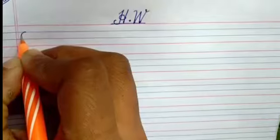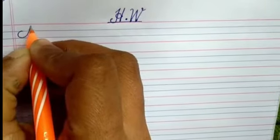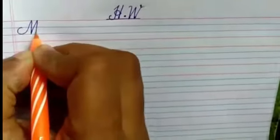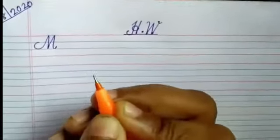Make a C like small curve. Go to line number 1. Come back to line number 3. Again 1 and 3 again. This is capital M.